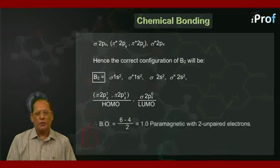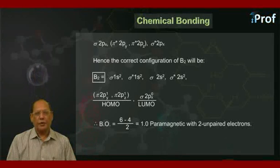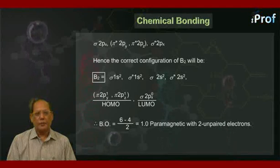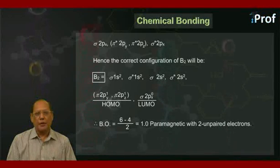So that the bond order comes out to be 6 minus 4 upon 2, that's 1, and this molecule is paramagnetic with two unpaired electrons in it.